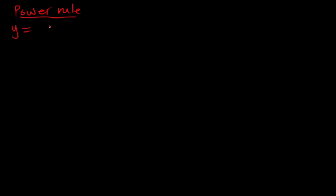In these tutorials we are going to solve some examples on the various rules of differentiation. We will start with the power rule. The power rule works as follows: if we have y equal to ax raised to the power n, then dy/dx is found by multiplying n by the coefficient, then reducing the power by one.